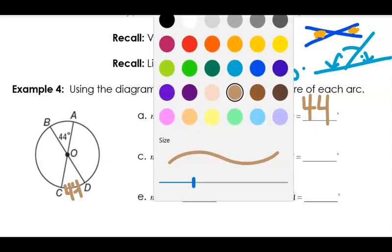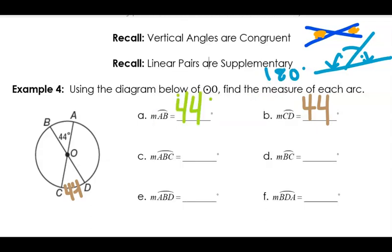Now I want to figure out what arc A, B, C is — going from A to B to C, going around here. Do you notice that this is a diameter because it goes through the center — a line segment going through the center? So that means arc A, B, C is a semicircle. Half of a circle is 180 degrees. Plus, this would be a straight line, so it would be 180 degrees.